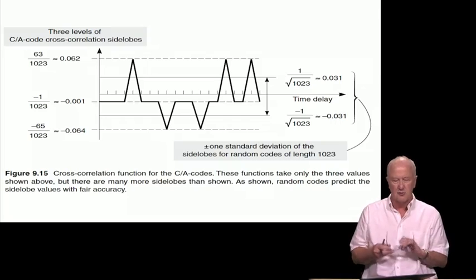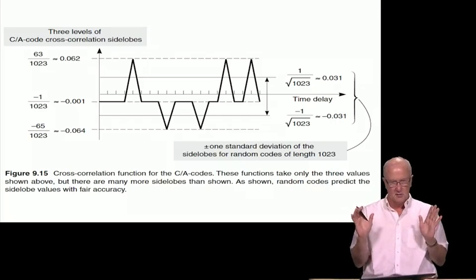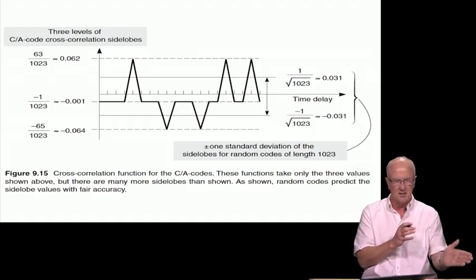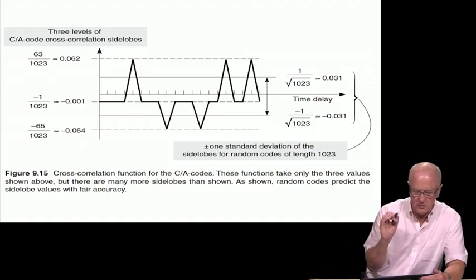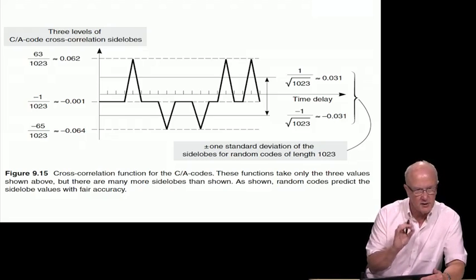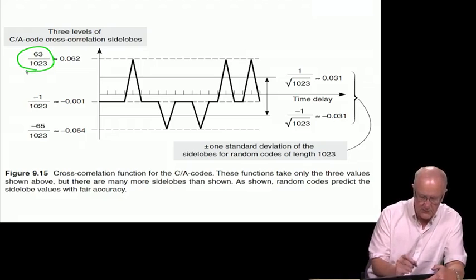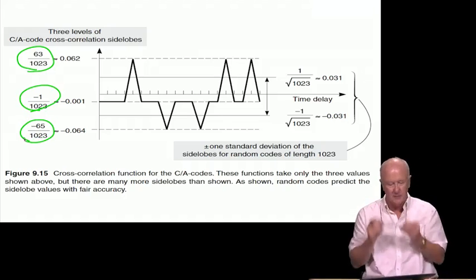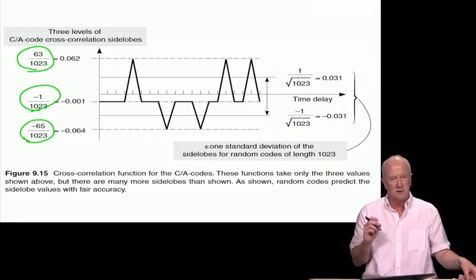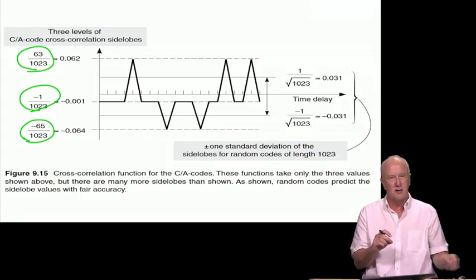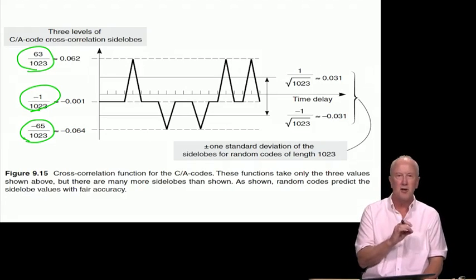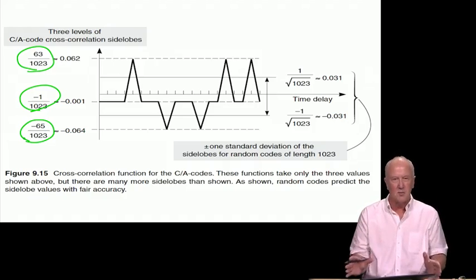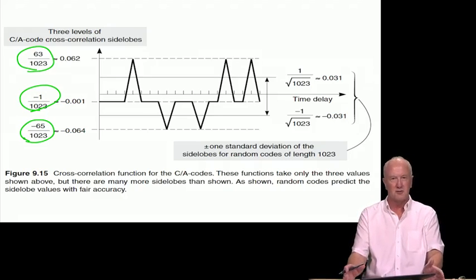So here we talk about cross correlation side lobes. Notice there's no main peak. We're grateful for that. That would have been a shame if all of a sudden there was a big strong correlation between let's say satellite 6 and satellite 7, but the so-called cross correlation side lobes are uniformly low. Here we have the 63 over 1023, the minus 1 over 1023, the minus 65 over 1023. Note that cross correlation values are the three non-unity auto correlation values. So that's a nice feature, a remarkable number theoretic outcome of the gold codes which are used by GPS.